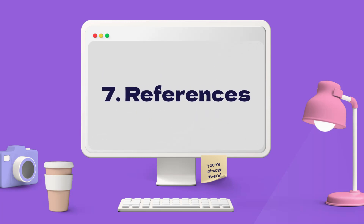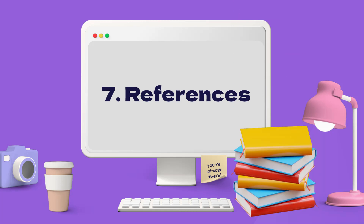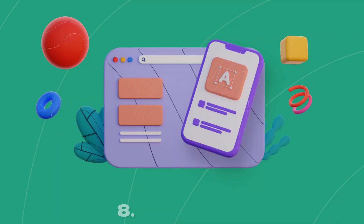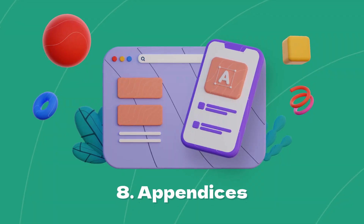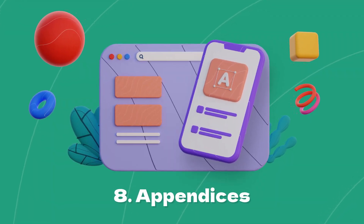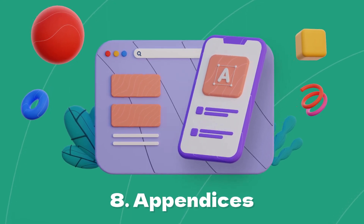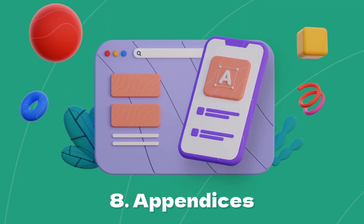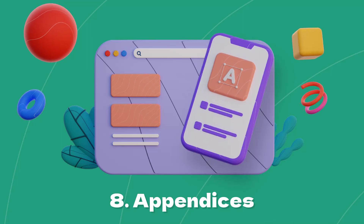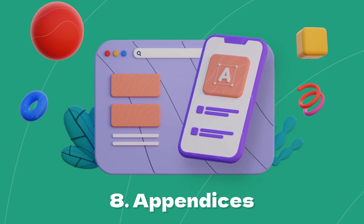Remember that you will also need to include a reference list or bibliography at the end, in which you list all the sources cited throughout the dissertation, and you may wish to include an appendix or appendices too. These are additional sections where you can include any materials that didn't quite fit into the main body of your text, but might be helpful to the reader, such as raw data, survey questions or longer samples of discourse.